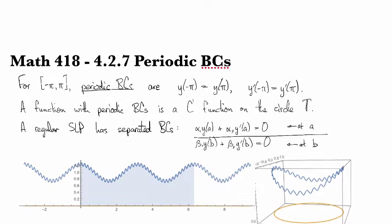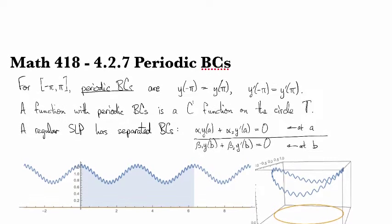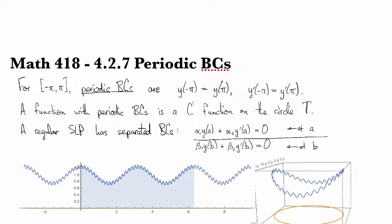Anyway, and if you're wondering why the circle is denoted with a T, that's for torus, because it's a one-dimensional torus.